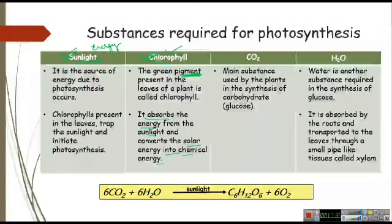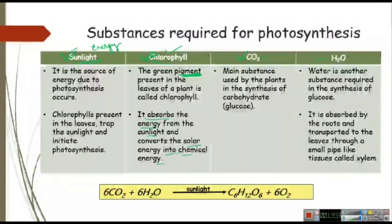Next we have carbon dioxide. You have heard of the nutrient carbohydrate. Carbohydrate is basically made from carbon dioxide and water — carbohydrate is composed of carbon dioxide and water. From the name itself you can understand: carbo from carbon dioxide, hydrate from water.